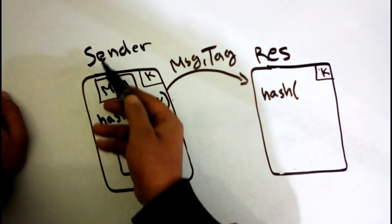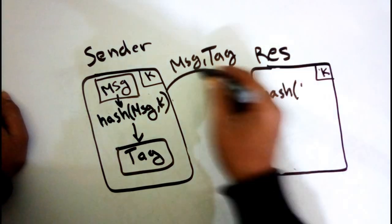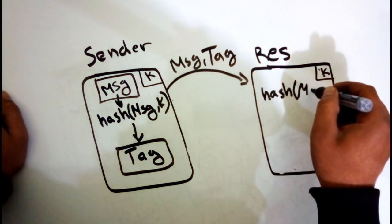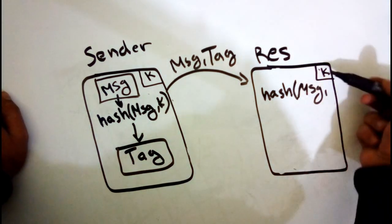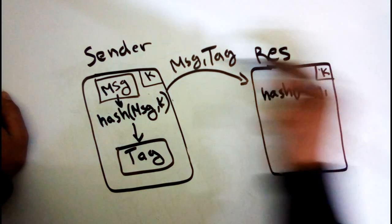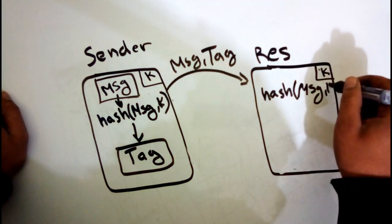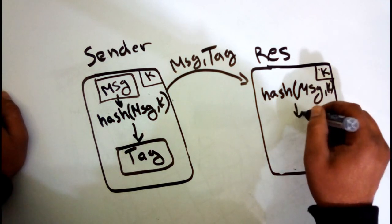The receiver hashes this message with the common key, which generates a tag.